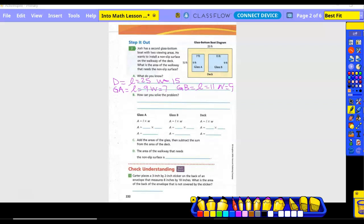What are we going to do to solve the problem? We're going to have another step compared to last time. We have another area. So we're going to find the area of the deck, then the area of glass A, the area of glass B, and then do some subtracting. Glass A: 9 feet by 7 feet equals 63 square feet.